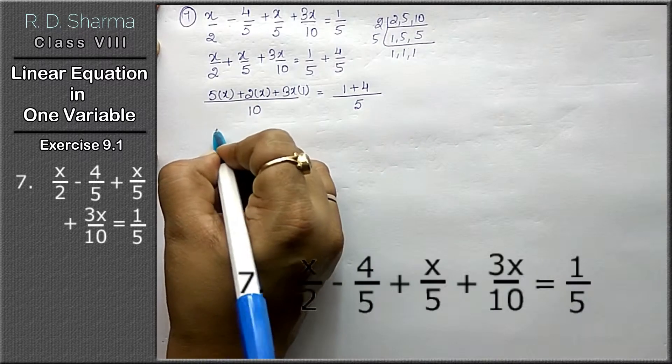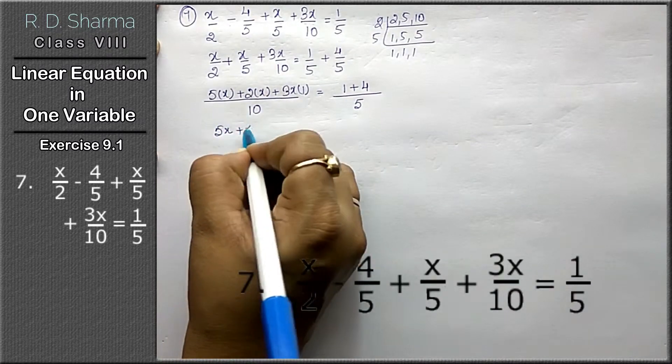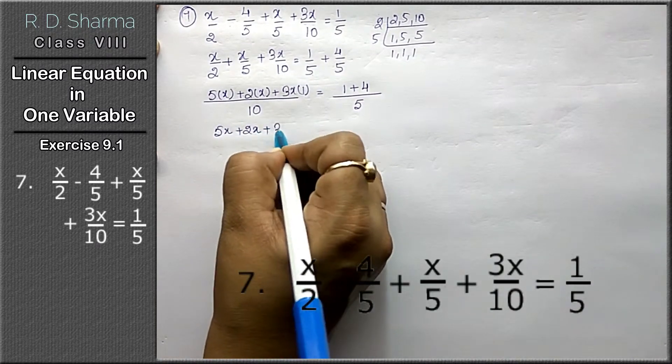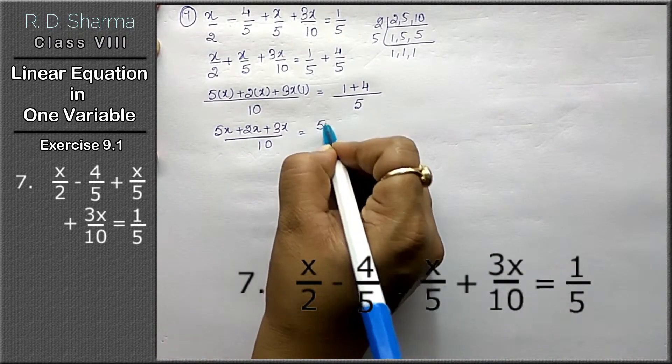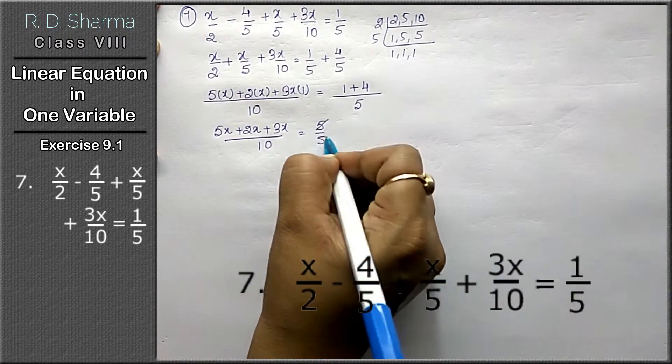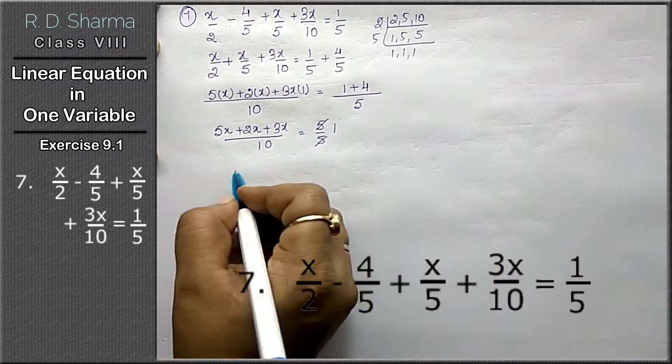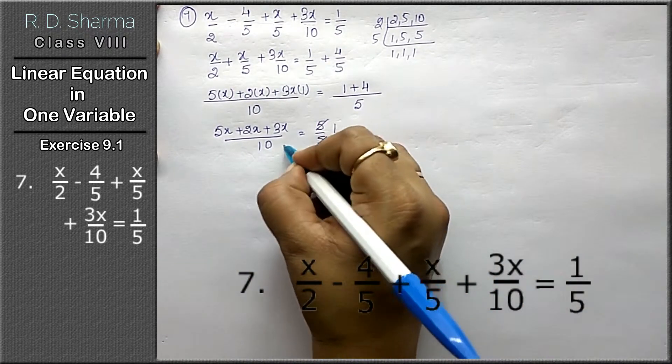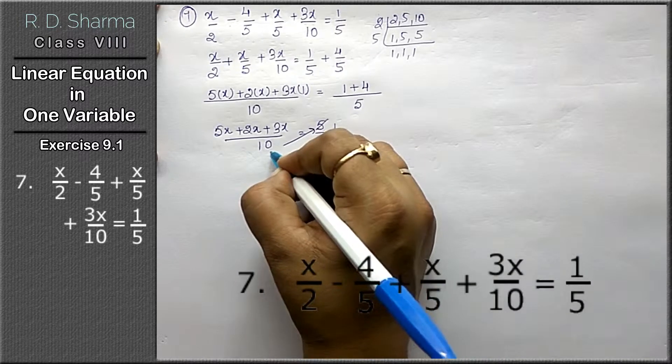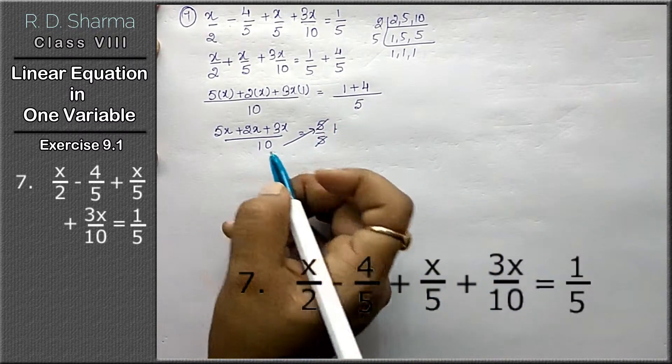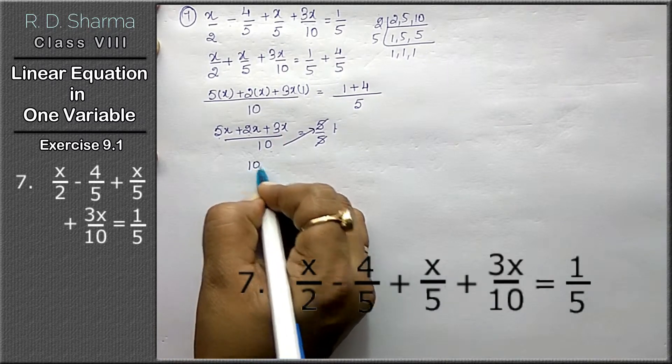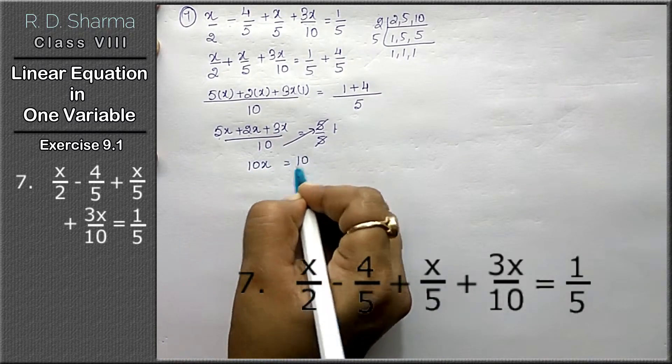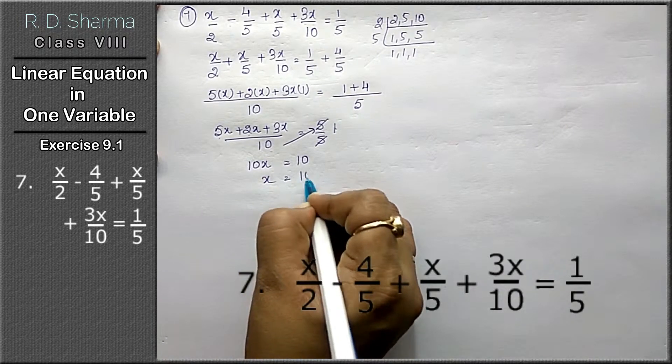Now 5x plus 2x plus 3x upon 10 equals to 5 upon 5, which will get cancelled and become 1. Now this 10 will go to this side; it is in division and it will multiply. 5 plus 2 is 7, 7 plus 3 is 10. So 10x equals to 10, x equals to 10 upon 10, that is 1.